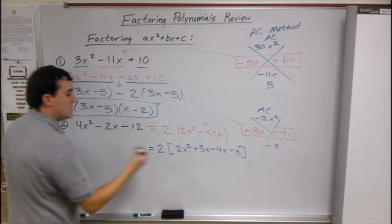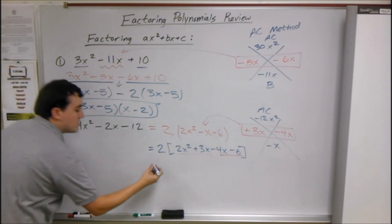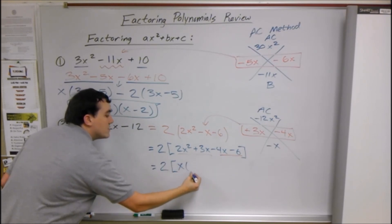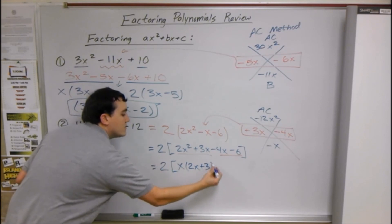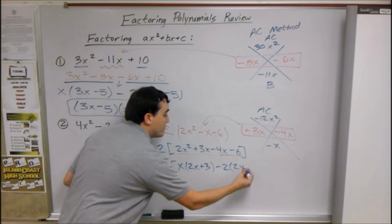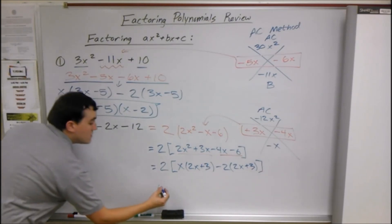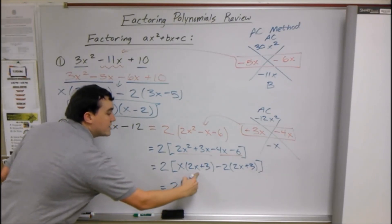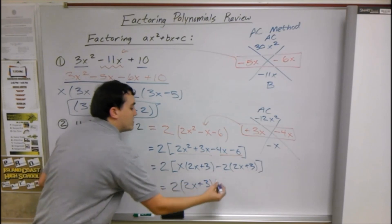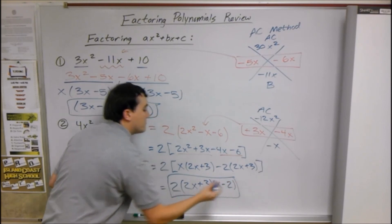We have 2 out front. Factor by grouping — group the first two and the last two. Take x out of the first two: x(2x + 3). Take 2 out of the last two: -2(2x + 3). The parentheses match, so everything on the inside goes in one: (2x + 3), and everything on the outside: (x - 2) goes in the other. Our final answer is 2(2x + 3)(x - 2). And that's all I have for today.